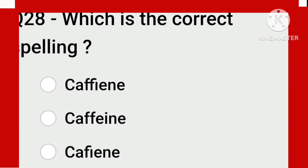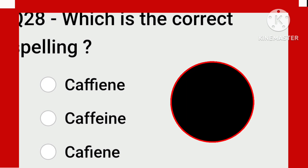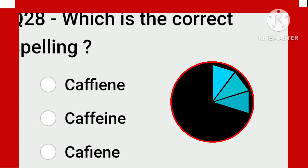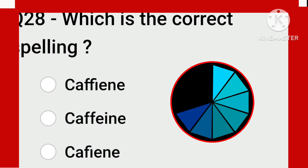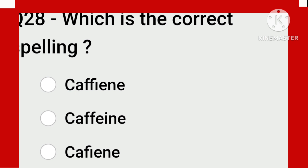Next is caffeine. In this word, the correct spelling is caffeine: C-A-F-F-E-I-N-E.